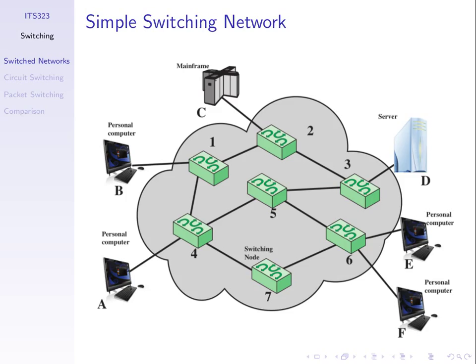We'll see why switching comes into it in a moment. The idea is if A wants to send data to F, because it doesn't have a link directly to F, it sends to some other node inside the network. This cloud represents the communications network made up of these nodes. The lines are links, whether wired or wireless. The stations are attached to the network and these internal nodes deliver the data from one station to another. One of the problems we said was finding the path.